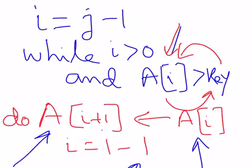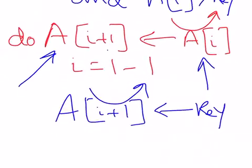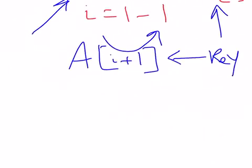In other words, for every new element, in the worst case, we have to go to the extreme left of the array to find a suitable position for it to be inserted. And that is why the complexity of insertion sort is order n squared.